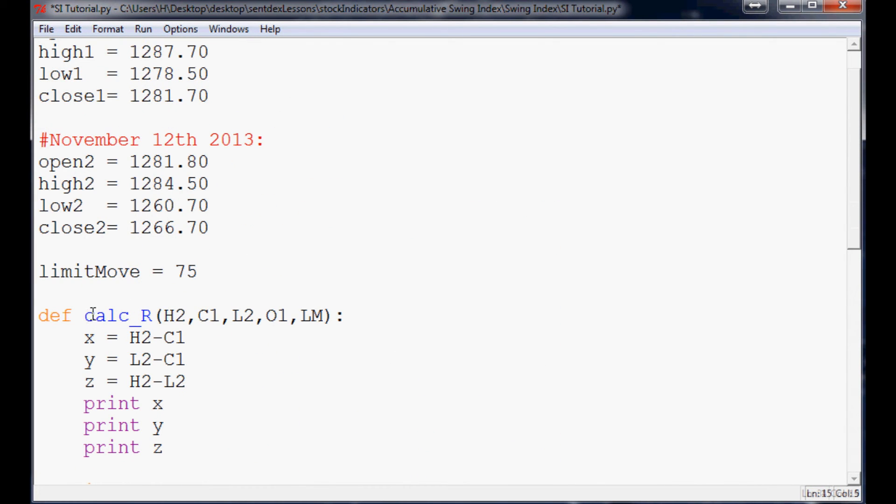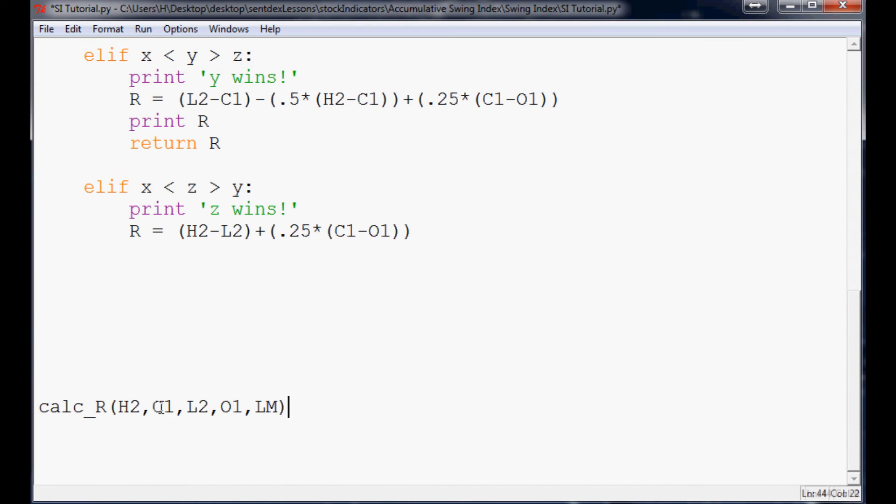So now, when we want to run this, so keep in mind, this is the actual function. So I'm going to copy this. And we're going to go down here, and we're going to call this function. And then we need to replace all the variables. So H2 is actually, you know, high 2. C1 is close 1. L2 is low 2. O1 is open 1. And limit move is 75.